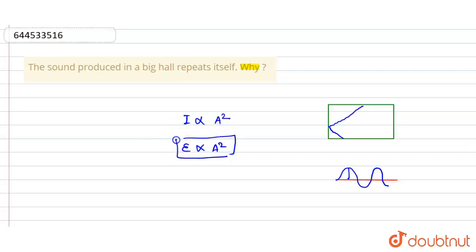So intensity will be higher and its energy will be higher. That's why the sound produced in a big hall repeats itself. I hope you understood. Thank you.